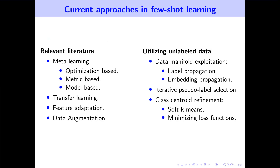Another line of research that investigates Few-Shot Learning is that of exploiting unlabeled data. Unlabeled data can be easily obtained at a much lower cost since no human labor is required for annotating the data, making this line of research very attractive. Various ideas have been proposed, such as exploiting the underlying manifold through label propagation, iteratively pseudo-labeling the unlabeled data before selecting the most confident pseudo-labels, and using the unlabeled data for class-centric prototype refinement.